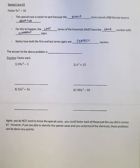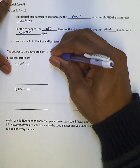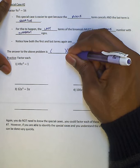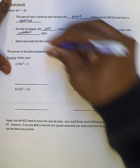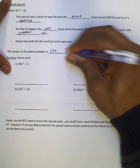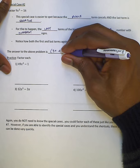Now notice how both the first and last term, again, are perfect squares. And the answer to the problem above goes like this. I'm using the square root of 9x squared, which is 3x. That'll be in both places. The square root of 16, which is 4, and that'll be in both places.